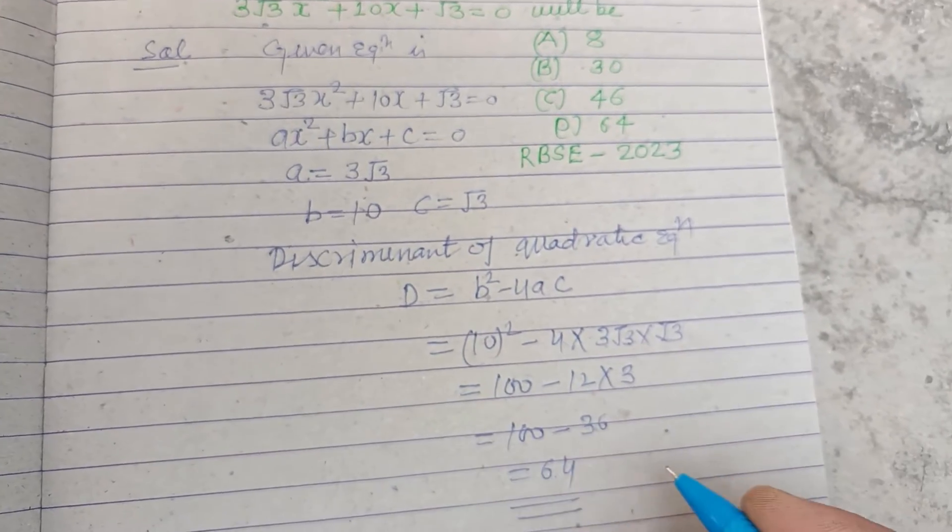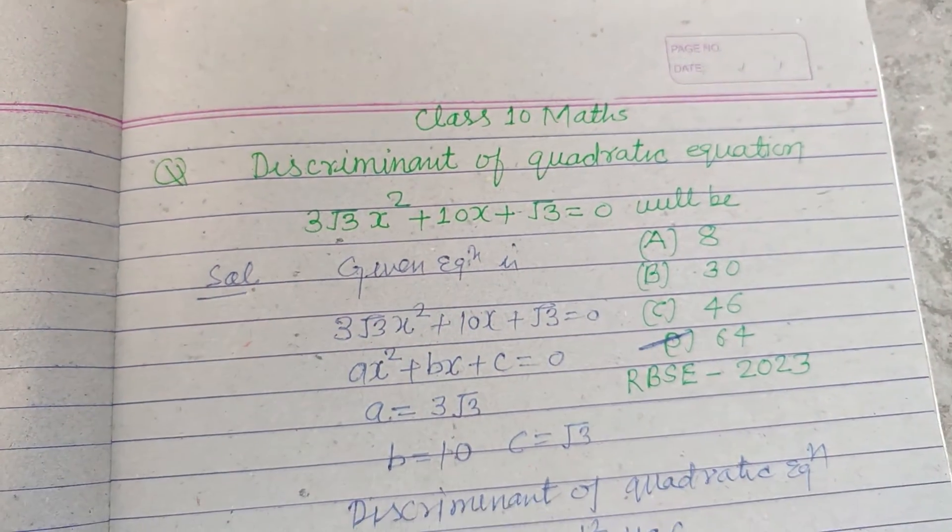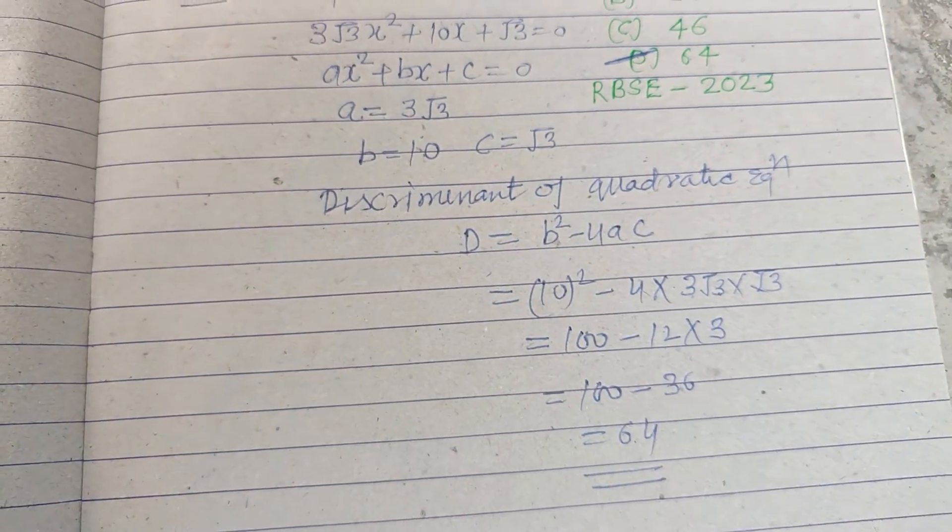This is 64. 100 minus 36 is 64, which is found in option D. Therefore, option D is correct. I hope you got it. Please like the video, subscribe the channel, thanks for watching.